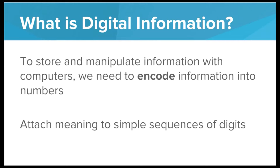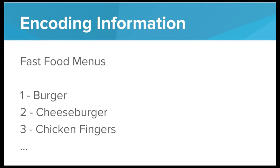So to store and manipulate information with computers, we need to find a way to encode that information into numbers. And to do this, we attach meaning to these simple sequences of digits. That way, to the computer, they're just sequences of numbers, but to us, they actually have meaning. We do this all the time in the real world — we attach meaning to numbers on fast food menus. You can go to a cashier and order a number two, and you and the cashier both know you're not literally asking for a number two — you're asking for a cheeseburger. So this is an example of encoding information: encoding fast food meals as numbers.